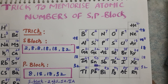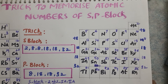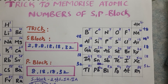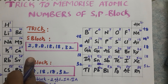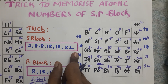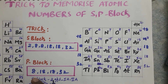This is how to memorize atomic numbers of s and p block elements with simple tricks. For s block elements, we need to add 2, 8, 8, 18, 18, 32. For p block elements, we need to add only 8, 18, 18, 32. That's it. I hope you understand the video. If you like my video, please subscribe and share.